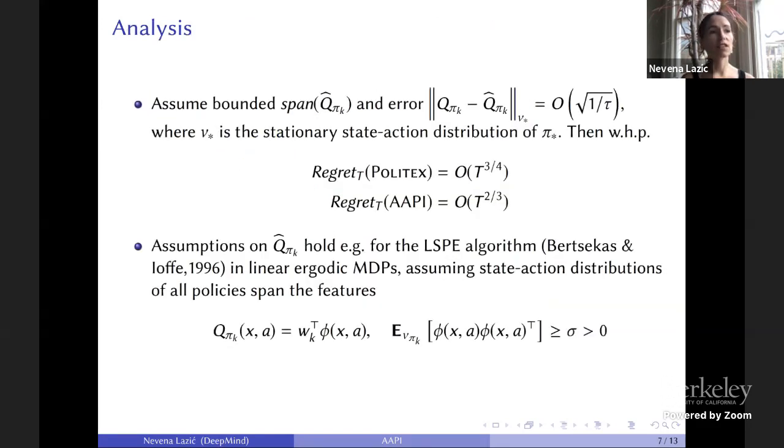In terms of regret guarantees, we can show that if Q function estimates are good in some sense, then the regret of Polytex scales as T to the three-fourths and AAPI as T to the two-thirds, where the main difference is due to the different online learning algorithm. We require the Q function estimates to satisfy: when we estimate a Q function from tau samples, the error scales as one over square root tau. This error is weighted in the stationary state action distribution of the optimal policy.